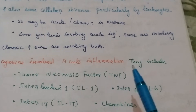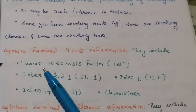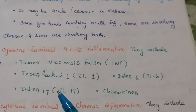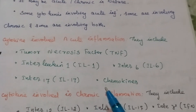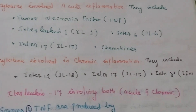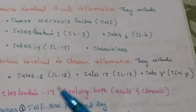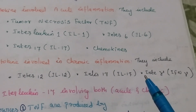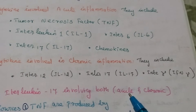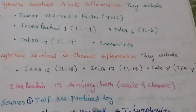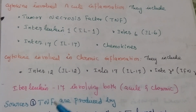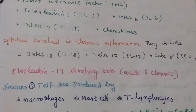To summarize: acute inflammation includes tumor necrosis factor, interleukin-1, interleukin-6, interleukin-17, and chemokines. Chronic inflammation involves interleukin-12, interleukin-17, and interferon. Some cytokines like interleukin-17 are involved in both acute and chronic inflammation.